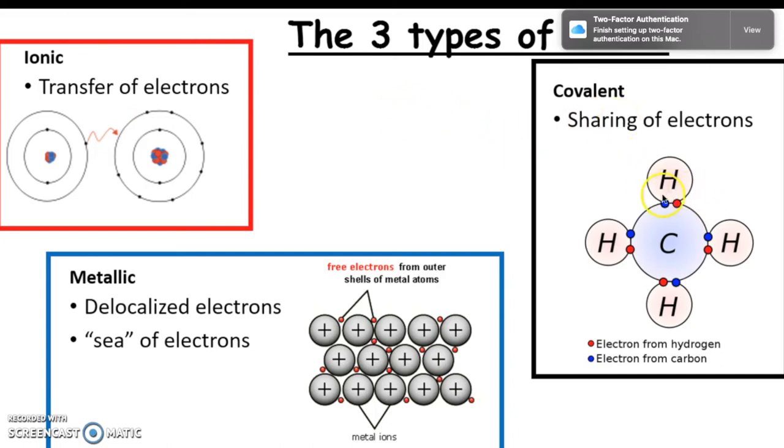Covalent bonding is a sharing of electrons. Carbon has four valence electrons and shares one with each of four hydrogens. Each hydrogen has one valence electron and shares it with carbon. So it's a sharing of electrons.